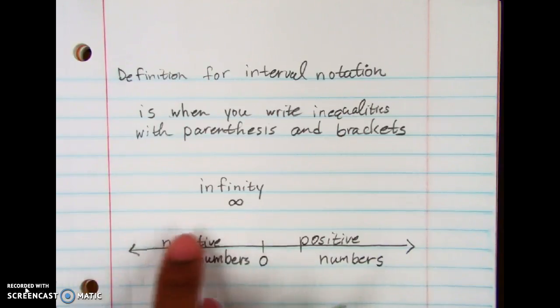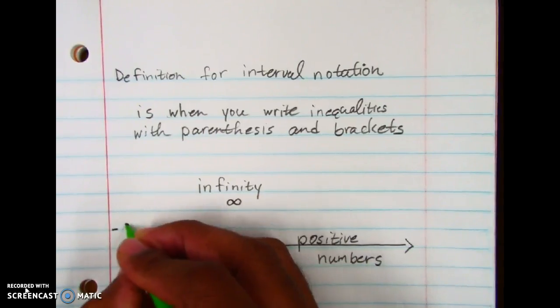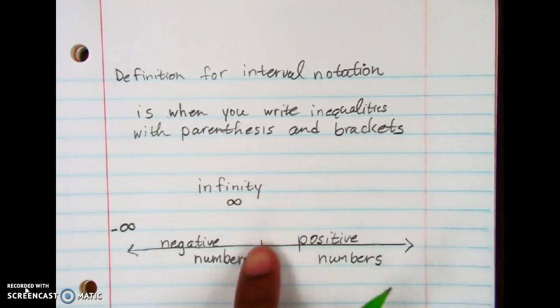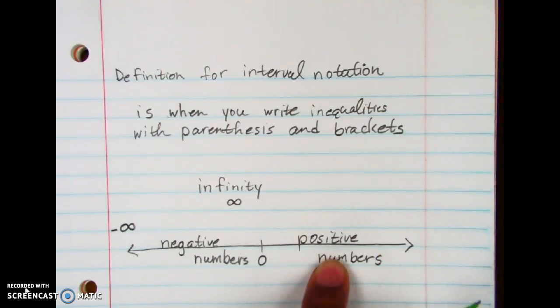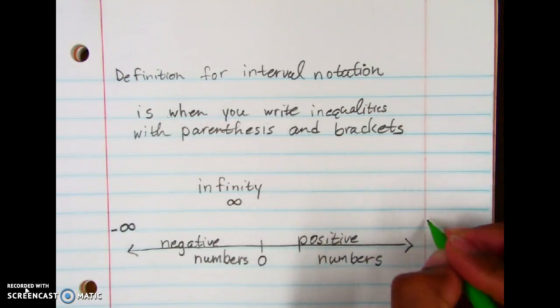Now with this to make it as simple and as easy as possible, if we have negative numbers on this side, that means the very last number over here on the left side, it's always going to be negative infinity, always. And all the numbers since this is the positive numbers on this side, so whatever that very last number on this side is always going to be positive infinity.